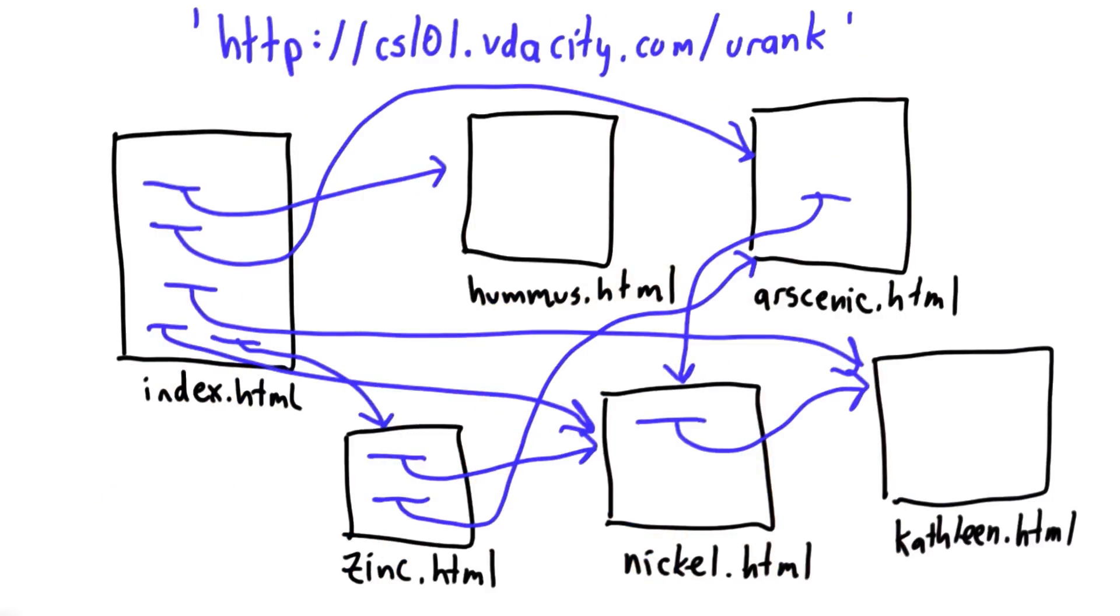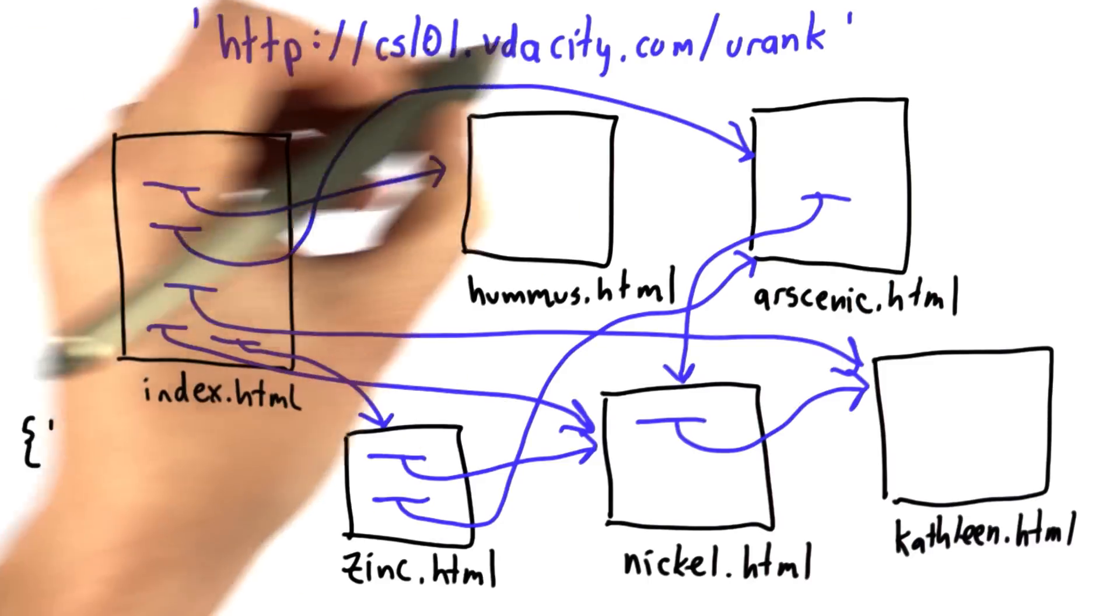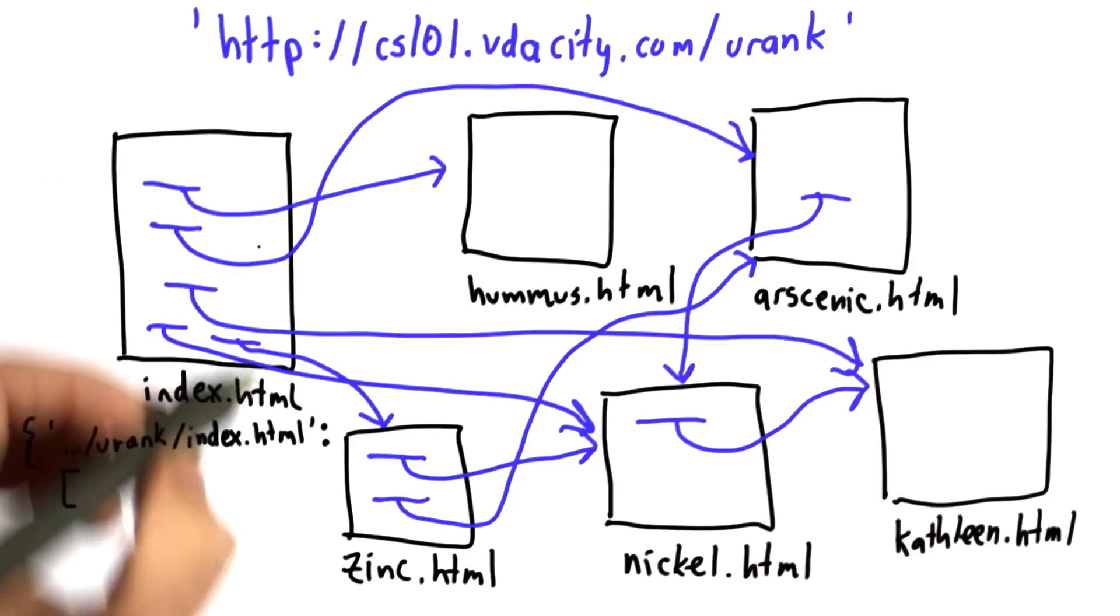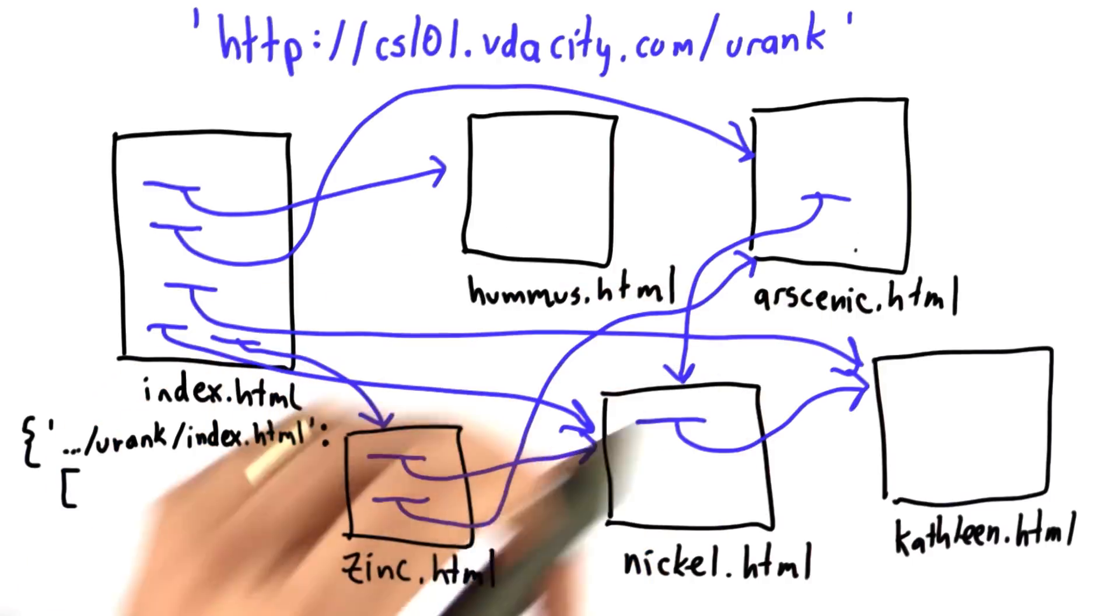So for this site, the graph that your crawl web should produce should have entries that show these connections. So there should be an entry where the URL is the urank slash index.html. I'm leaving out the beginning of the URL. And the entries should be a list of all the pages that that links to. So there are going to be five pages.